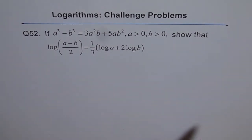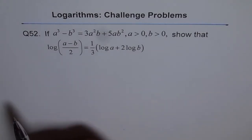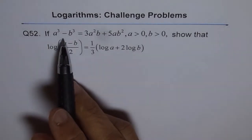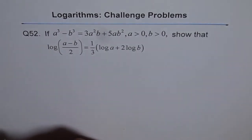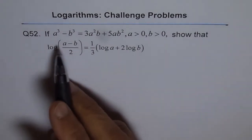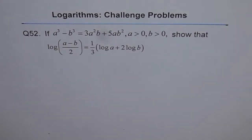Now, this is a challenge problem in the series of logarithms, and it's a very interesting problem. What you see here is a cube minus b cube equals to something. This gives us an idea that we can form it in a cubic form and then probably get the solution.